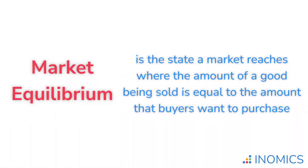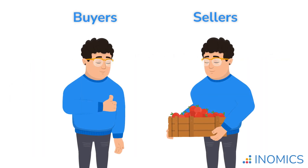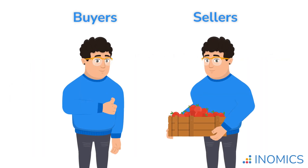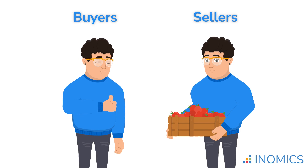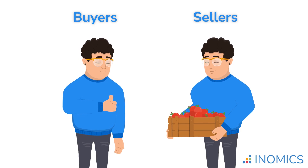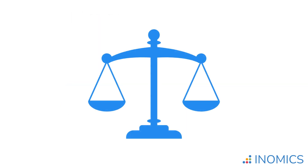Therefore, market equilibrium is a state a market reaches where the amount of good being sold by producers is just equal to the amount that buyers want to purchase. This state is reached by setting the price so that just as many sellers want to sell the good as buyers want to buy it at that price. When a market is in this state, we call it equilibrium.